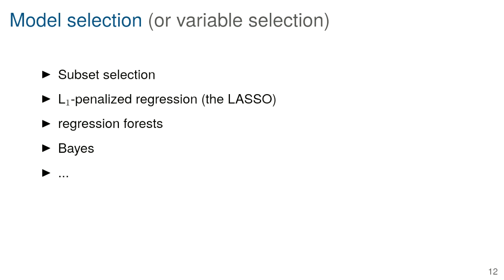There are many different approaches for doing model selection in a regression context — trying to build models that may include omitting some variables. These include subset selection, identifying a fixed subset of variables you're interested in, L1-penalized regression called the lasso where you put a penalty on the sum of absolute values of effects causing some covariates to be thresholded to zero, forest regression, Bayesian methods, and various other approaches.